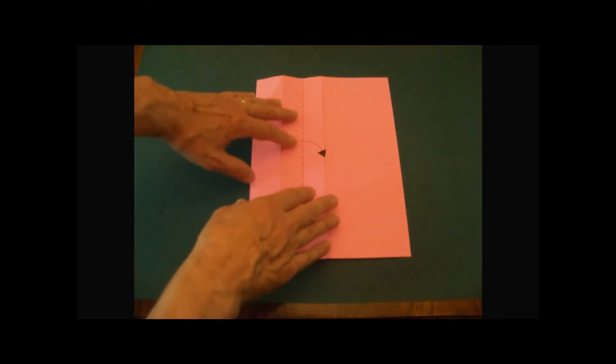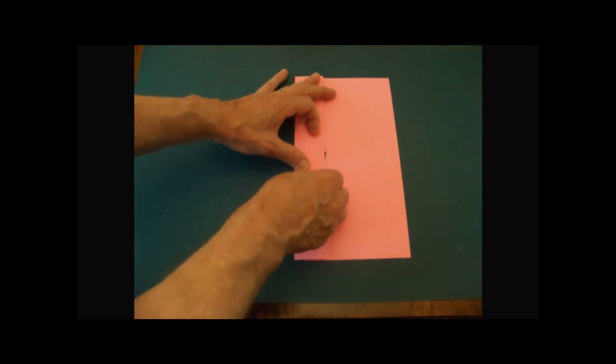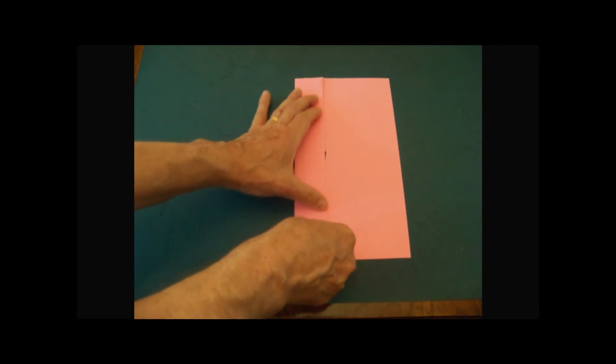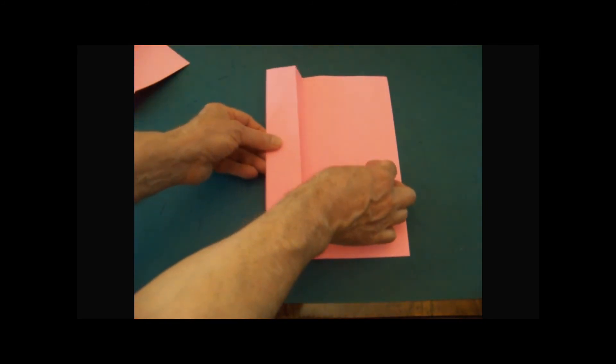Fold the just creased line to meet the center line and this will form the next two segments. Unfold the paper completely.